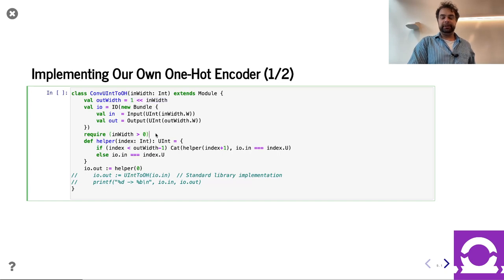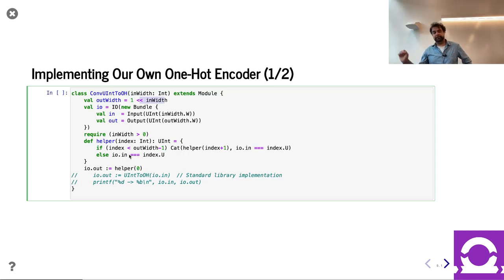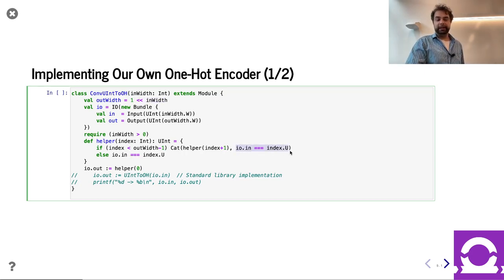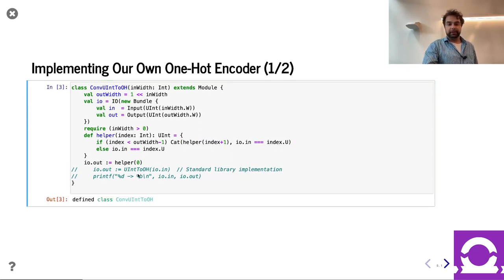So this is a fun chance for us to build our own one-hot encoder. We're going to take as input a UInt of width w, and then produce a one-hot encoding of that number — the much wider width of two-to-the-w. We've chosen to go for a recursive solution, a divide-and-conquer scenario. We're going to go through the bits and figure out if they should be on. The original input is in-width wide, but the output is going to be out-width wide, which is two-to-the-in-width — that's what the shift is going to cause. Basically, we're going through one by one, seeing if each output bit matches the current input value, building this up bit by bit over recursive functions.